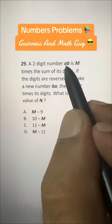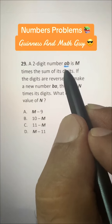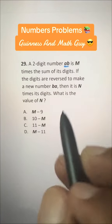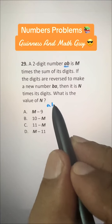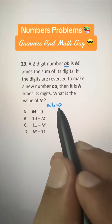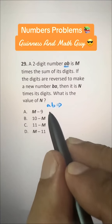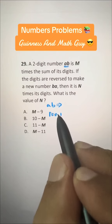If there is a number AB, like if it is 27, it means 20 plus 7. So, let's expand AB. AB is 10A plus B, right?